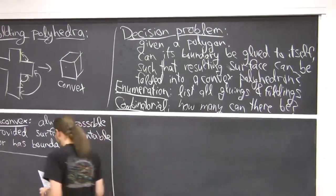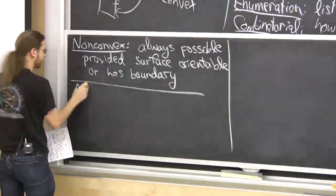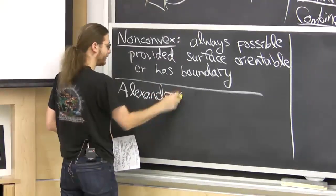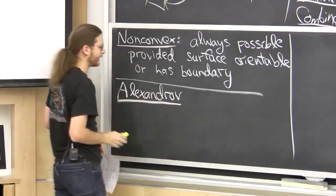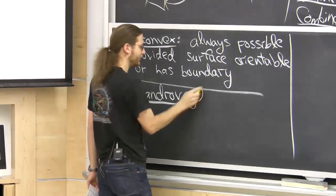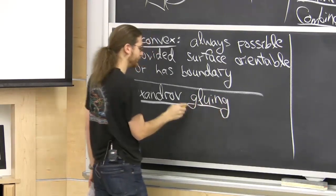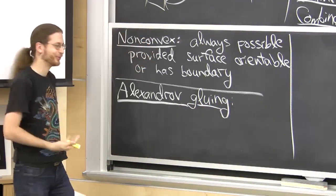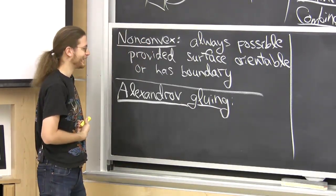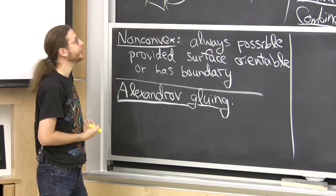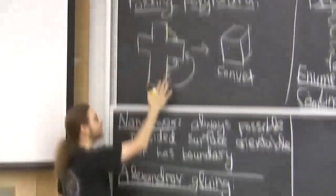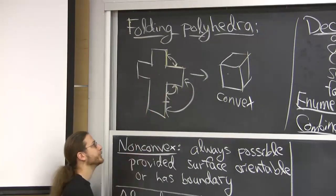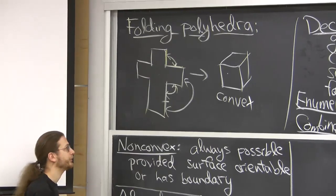So I want to talk about Alexandrov — not really the man, but the mathematics that he did. We're going to appropriate his name and talk about Alexandrov gluings, a term we made up. We'd like to know which gluings are valid. We're not going to think about where the thing is creased or how to fold it; we're just going to focus on the gluing for now. What makes a gluing valid?